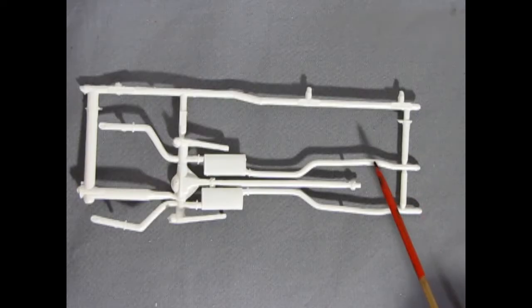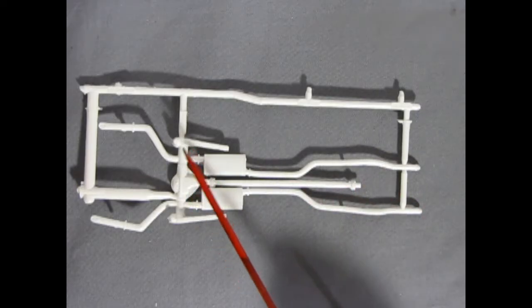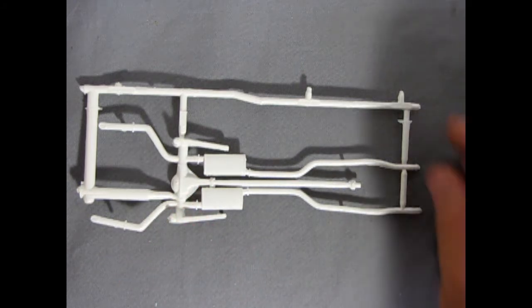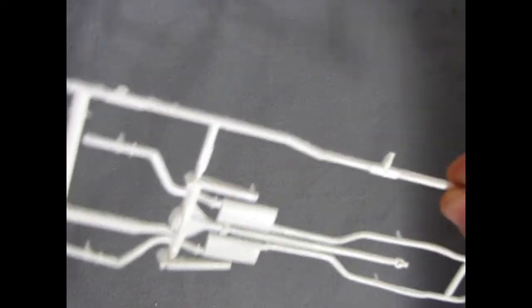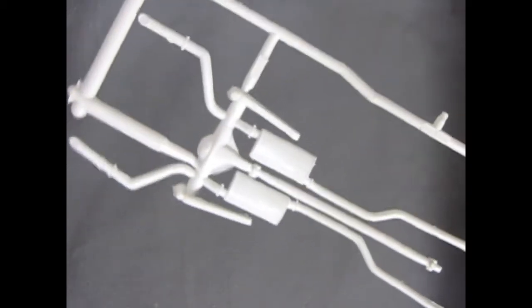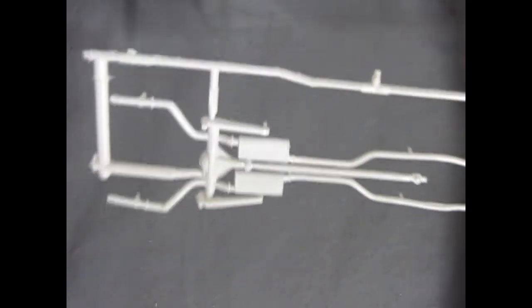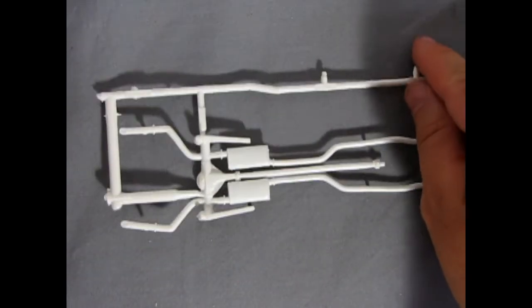Here we have our exhaust pipes, mufflers, drive shaft, differential and rear suspension components all molded as one solid piece. And the detail on here is not really that deep. Although this will give your car the actual look of a real car from underneath.